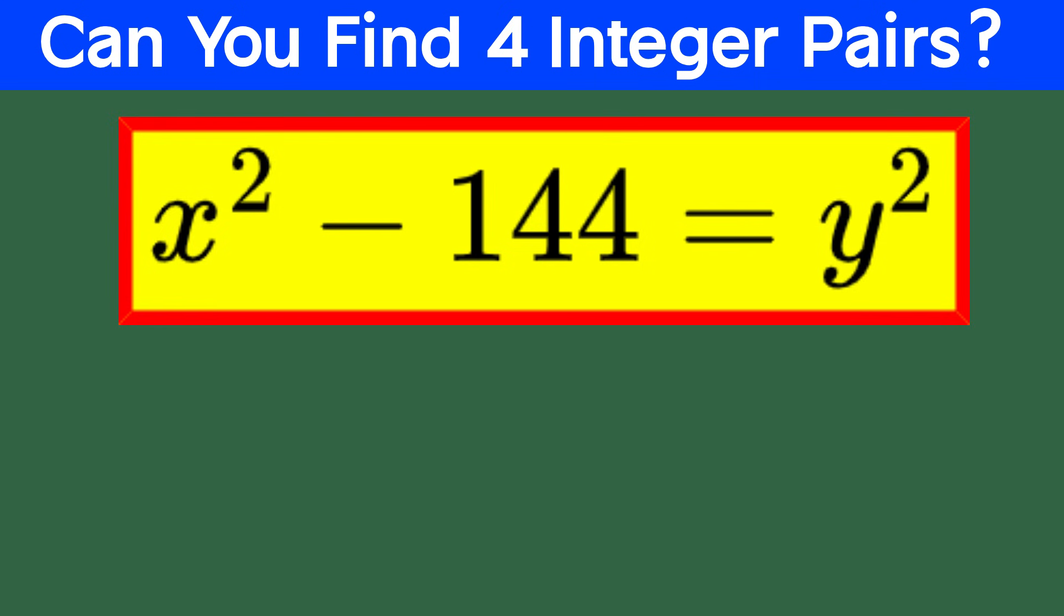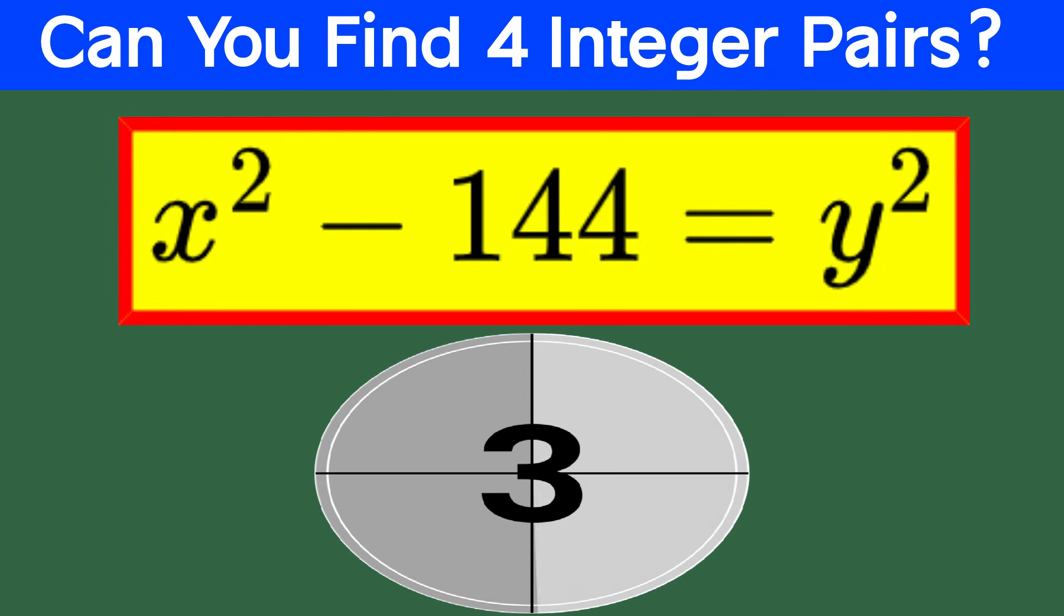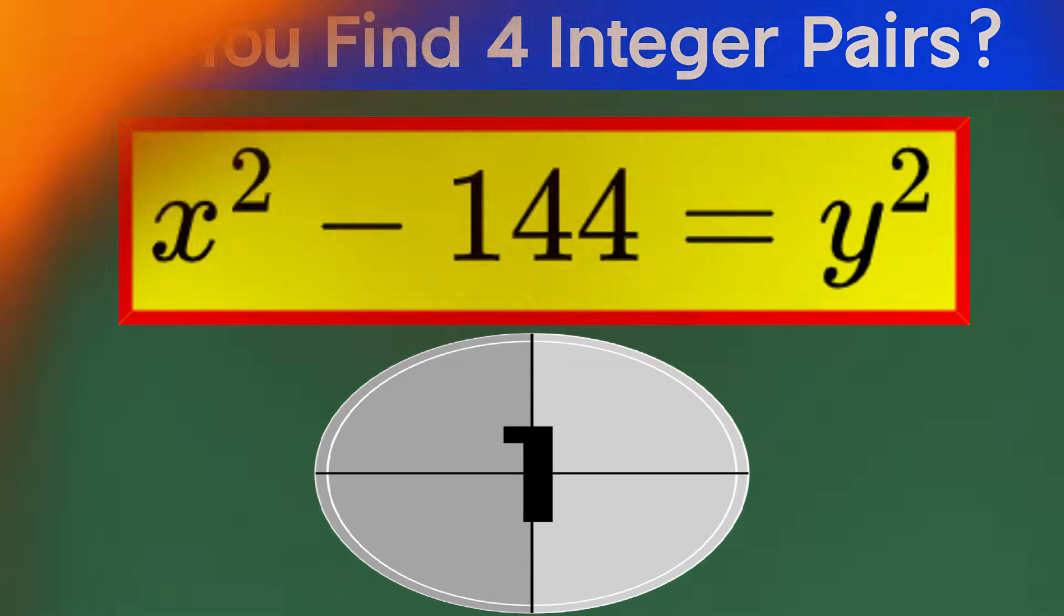And hey, no pressure, if you can't find all the integer pairs, that's totally fine. Even part of the answer is better than nothing. After all, every small victory counts, and who doesn't love the satisfaction of a good number puzzle? Plus, let's be honest, if you've made it this far, you're already cooler than the average person who runs screaming at the sight of a square root.